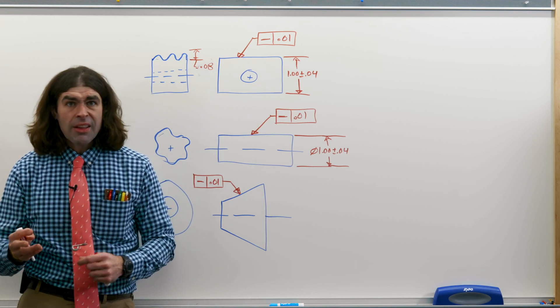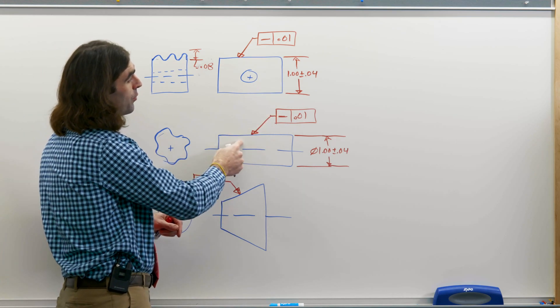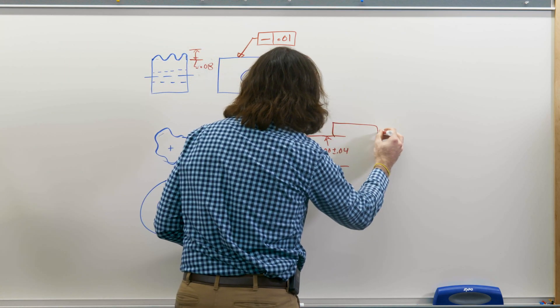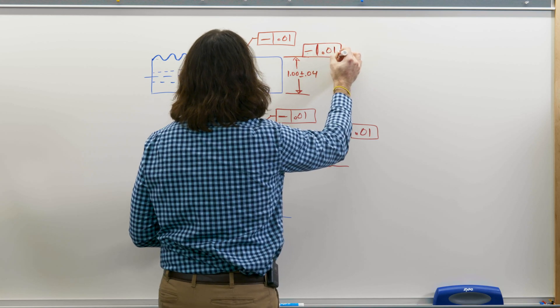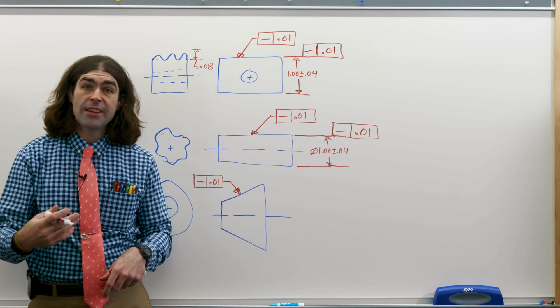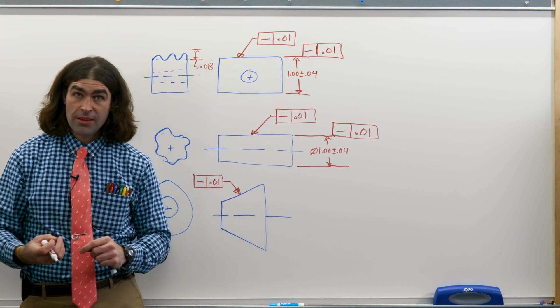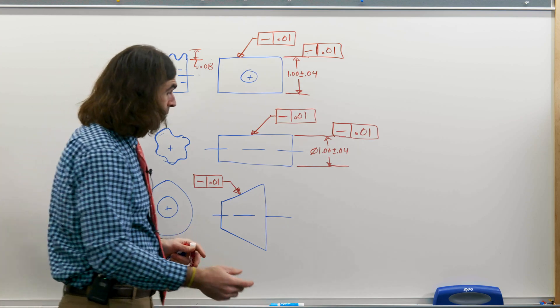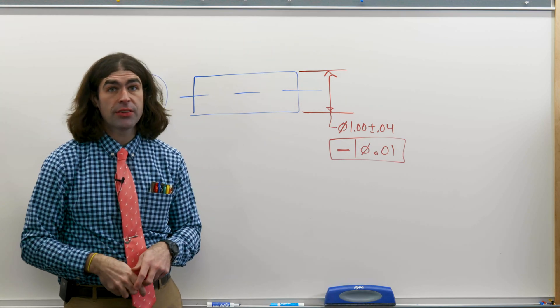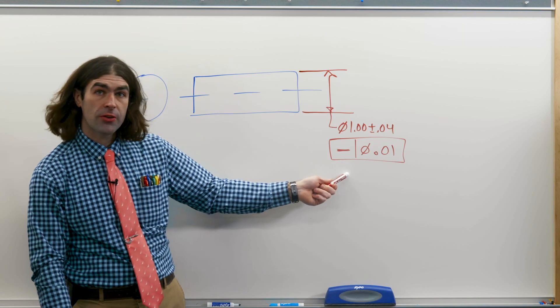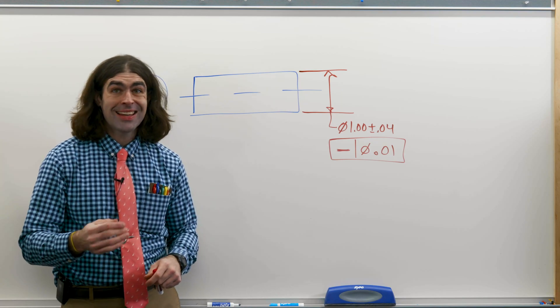So now let's talk about straightness of a derived median line. If you notice on these, it's leader directed to the surface. It could also be attached to the extension line. Notice there's no datum references and there's no diameter symbol in the feature control frame. When it applies to a derived median line, we're going to write it differently. There's a couple key differences in this situation. If you notice the feature control frame is now attached to the dimension. That's a dead giveaway that it applies to the feature of size, not to a surface.